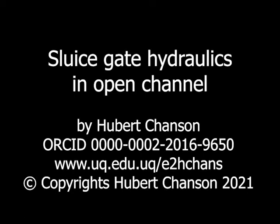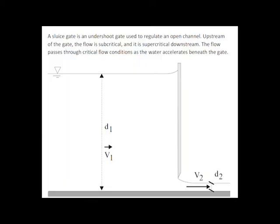A sluice gate is an undershoot gate used to regulate an open channel. Upstream of the gate, the flow is slow and subcritical, and it is fast flowing and supercritical downstream. The flow passes through a critical flow condition as the water accelerates beneath the gate.